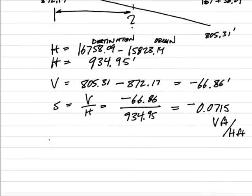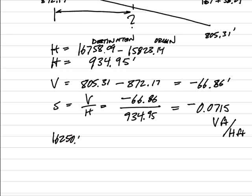So that's simply going to be the horizontal change. I'm going to take 16250 minus my 15823.14, and I get a change there of 426.86 feet.